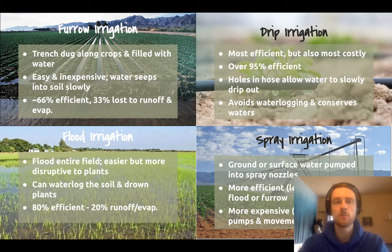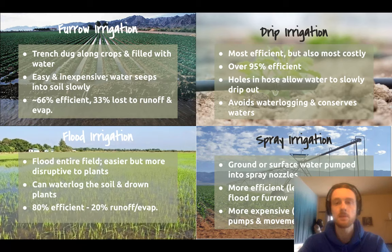We'll start out with furrow irrigation, which is just digging a trench along your crop rows and filling it with water. This is cheap and easy, but it's the least efficient method — you lose about 33% of your water as runoff. That's a problem if your water is expensive, and it's a problem because that's 33% not getting into your crops.